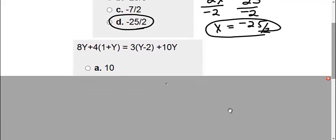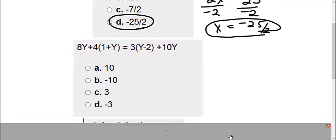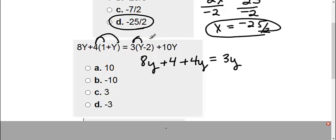Okay, now you try number 2. This time, we're solving for y. I need to get all my distributions first, and then I can combine my like terms. That 8y, I can't do anything with, so I'm just going to write 8y. But then I can distribute this 4 in here. 4 times 1, I get a positive 4. 4 times y is a positive 4y. And then I'm going to distribute this 3. 3 times y is 3y. 3 times negative 2 is a negative 6. And then I still have my plus 10y.